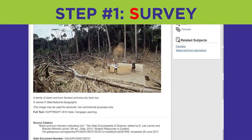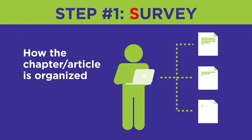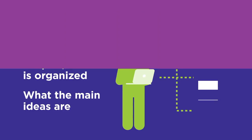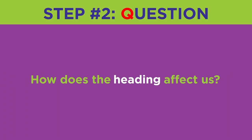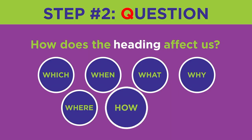Now you should have a general idea of how the chapter or article is organized and what the main ideas are. The second step is to turn each heading and subheading into a question. Use some of these question words to get started: which, when, what, why, where, how, and who. Write down your questions to refer to as you read the text.